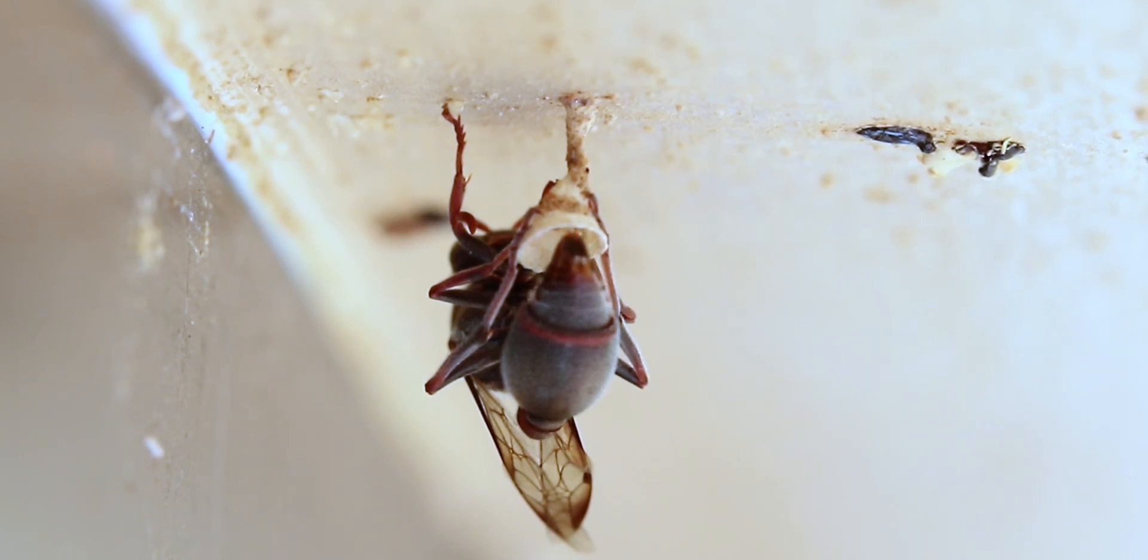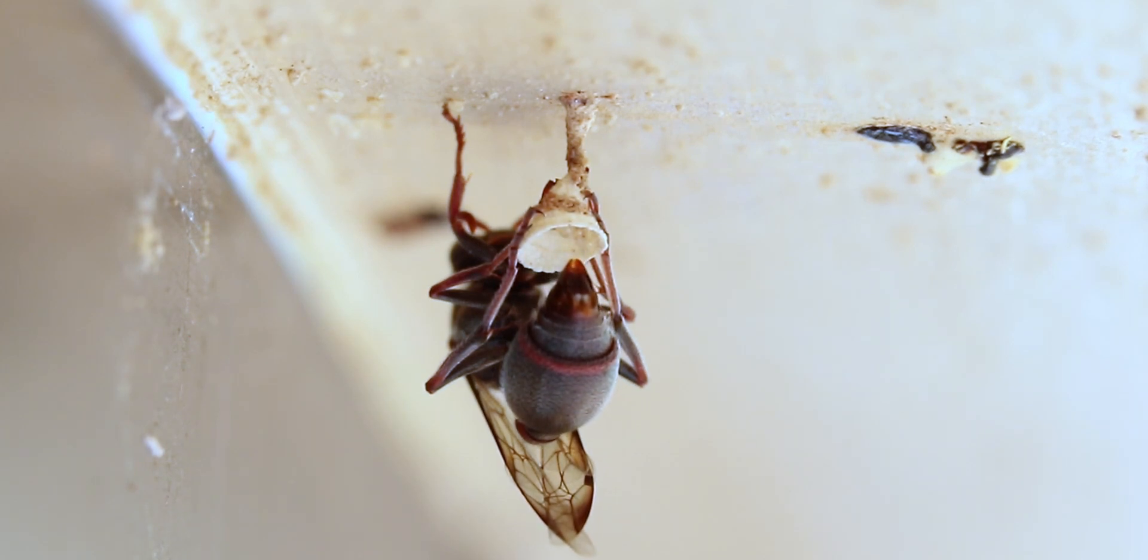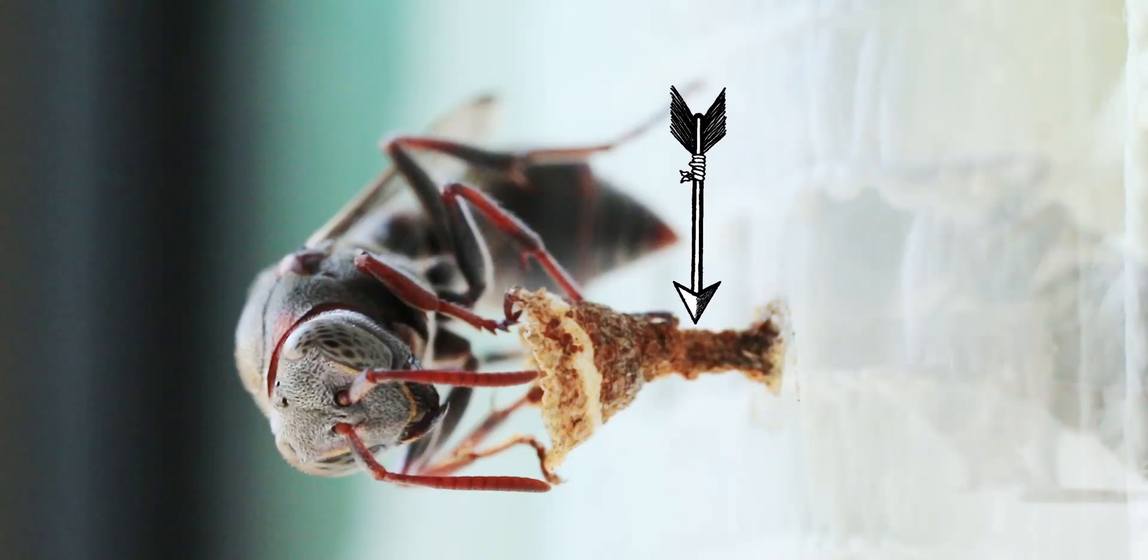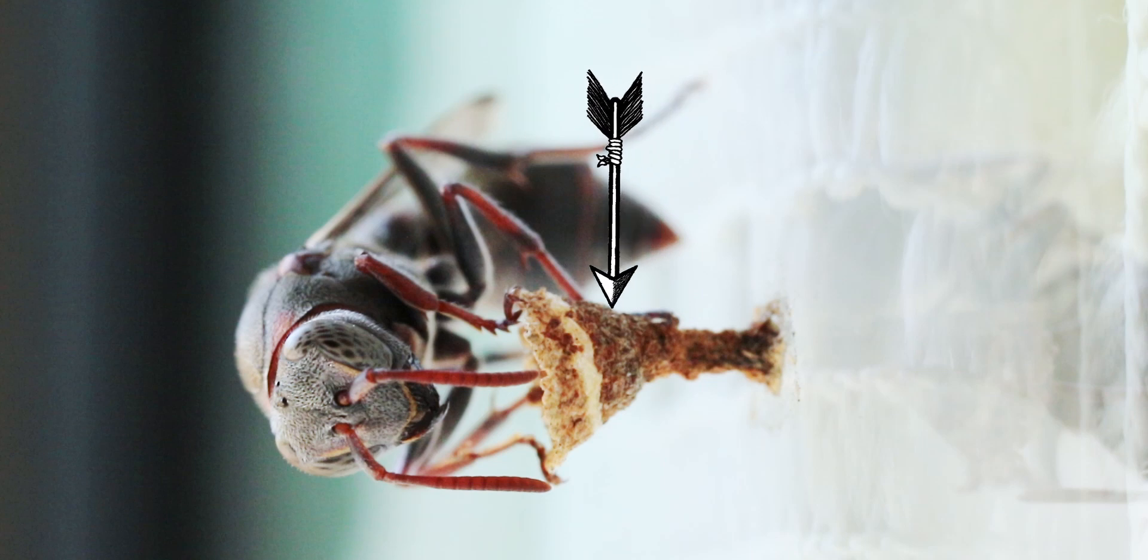To build their paper nests, these wasps chew dead plant material like leaves and twigs which they then mix with saliva or spit to create the paper. The colors of the paper nest often differs as the wasp uses different materials to build the nest with.